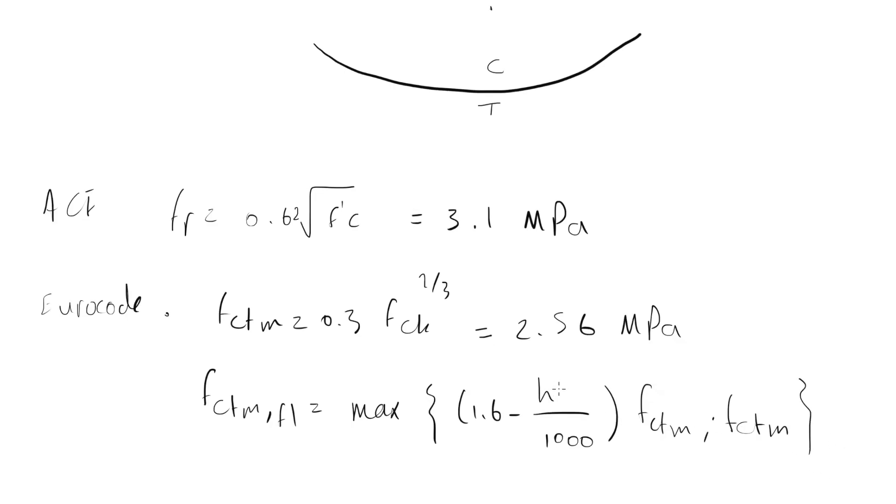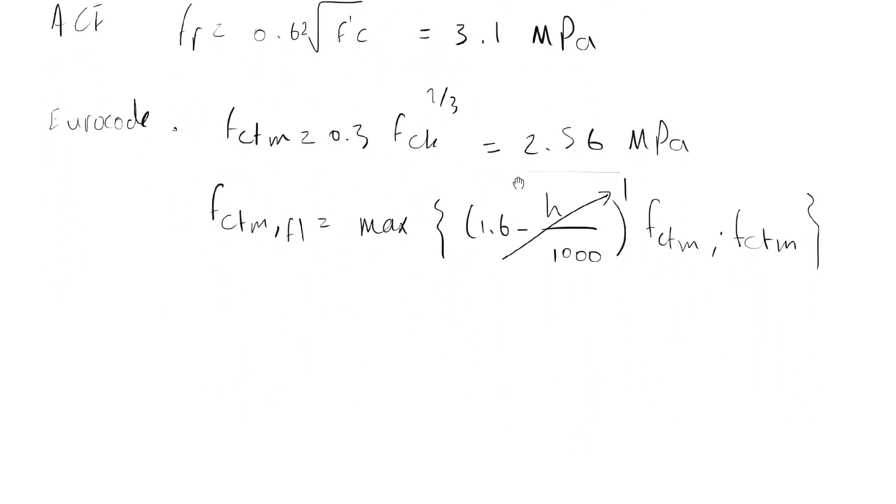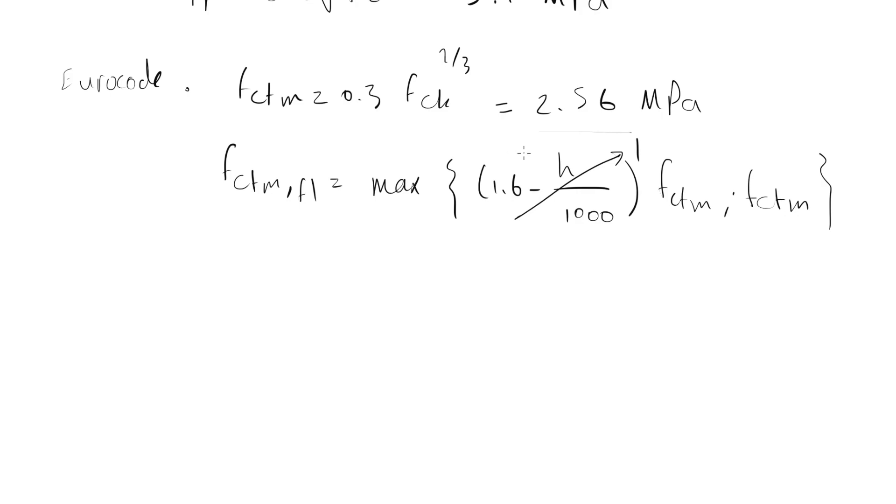H of the beam is 600 millimeters in our case and putting it here, this term will be 1 and then the value will be FCTM alone. So again, it will be 2.56 megapascals. Now we have found the tensile strength of the concrete in bending, which will be the controlling value.